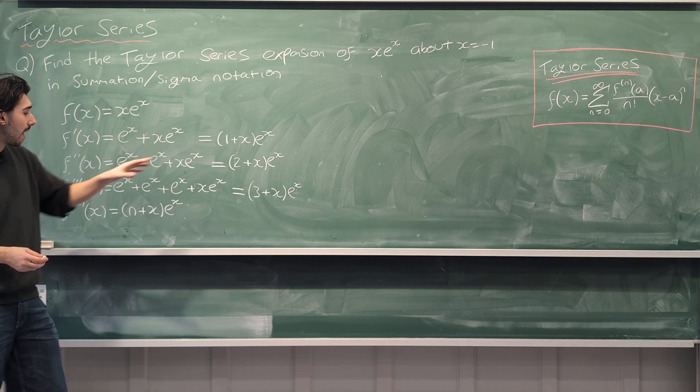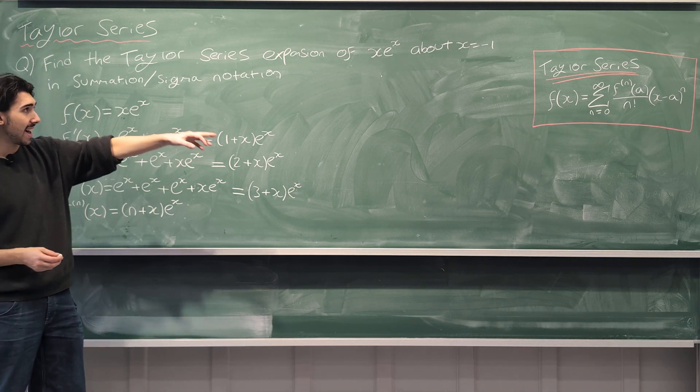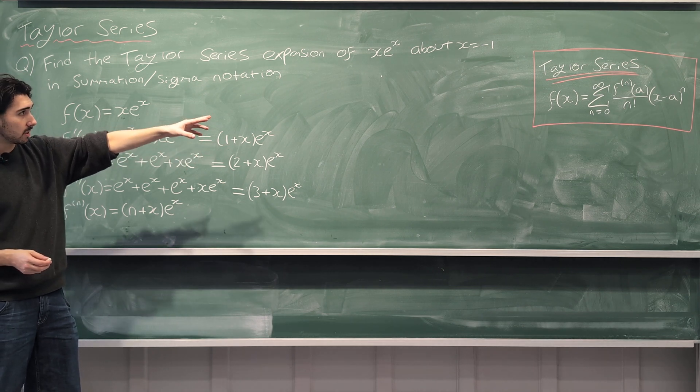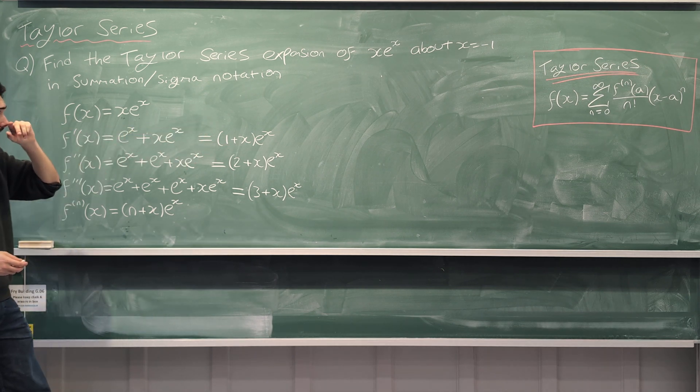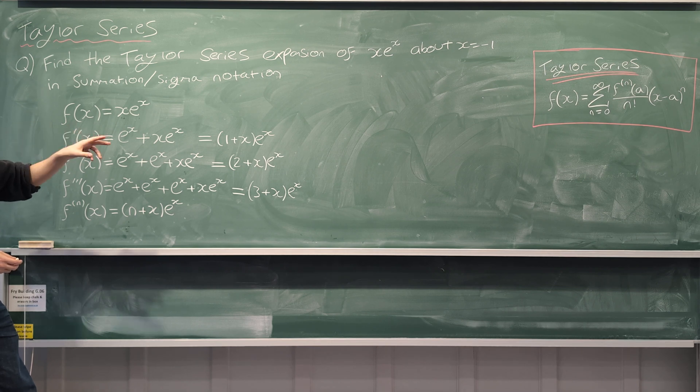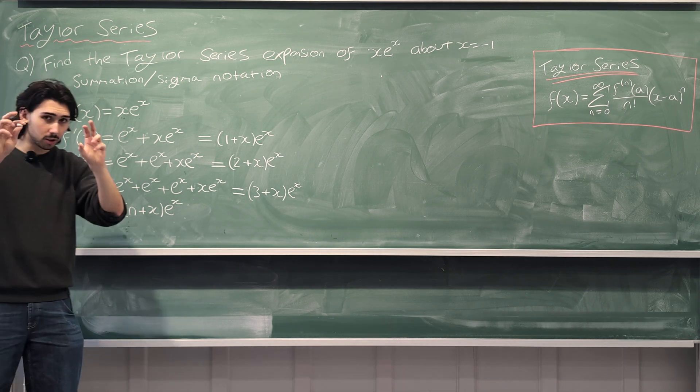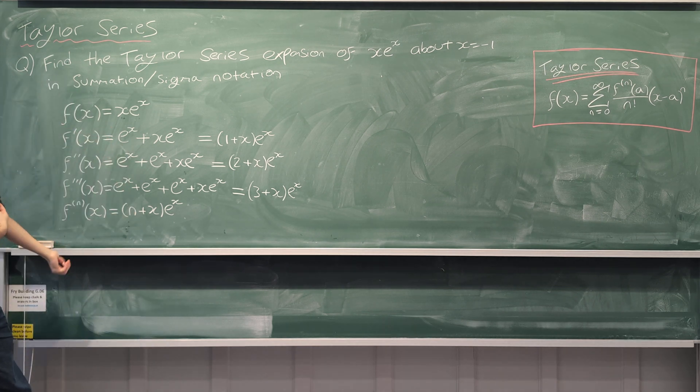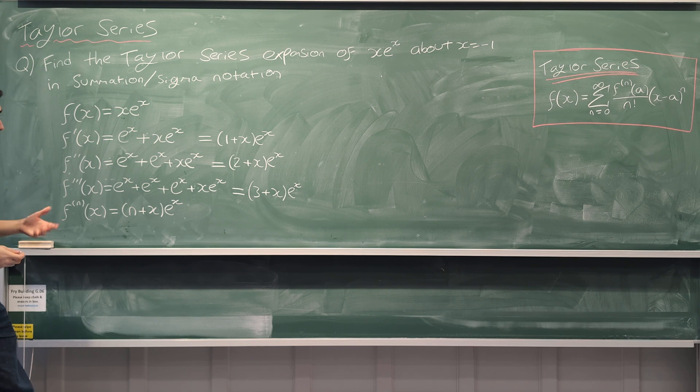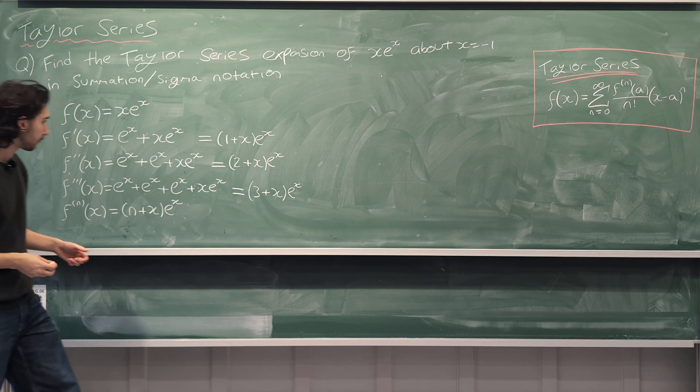So remember, we need to evaluate all of these derivatives at a. In this question, a is minus 1 because x is minus 1. That's how it works. A is always wherever you're centered around, that's what a is. So we need to plug in minus 1.